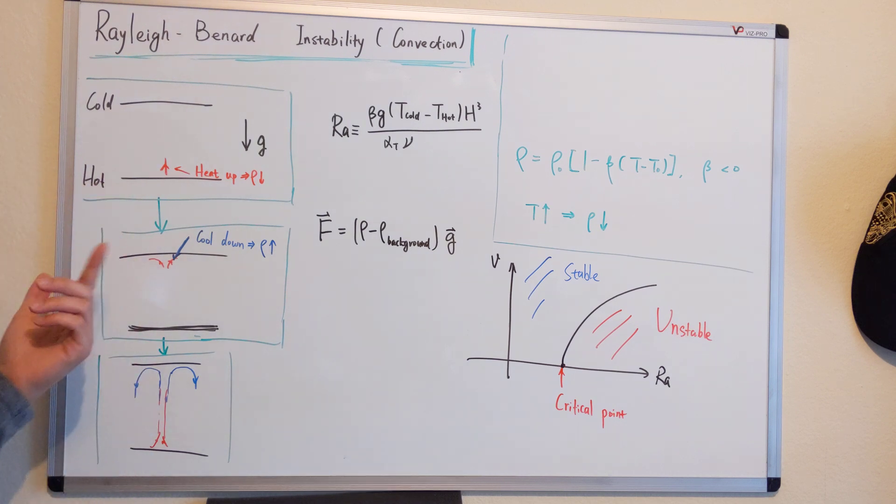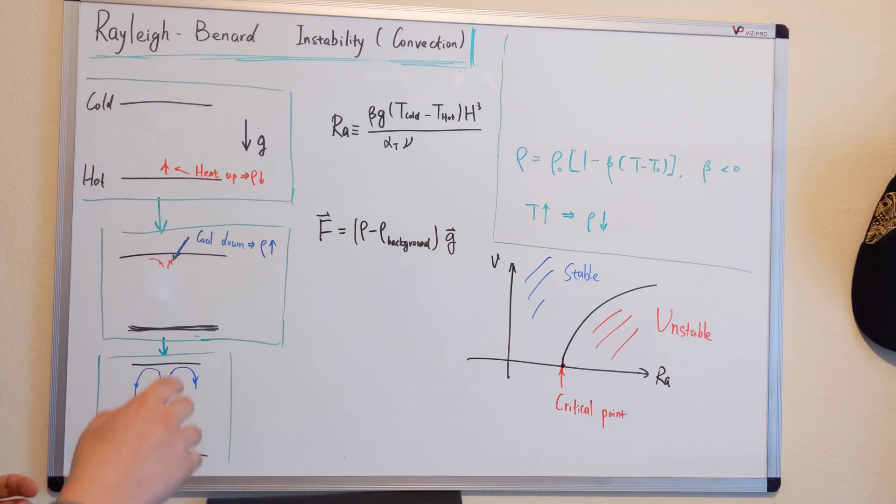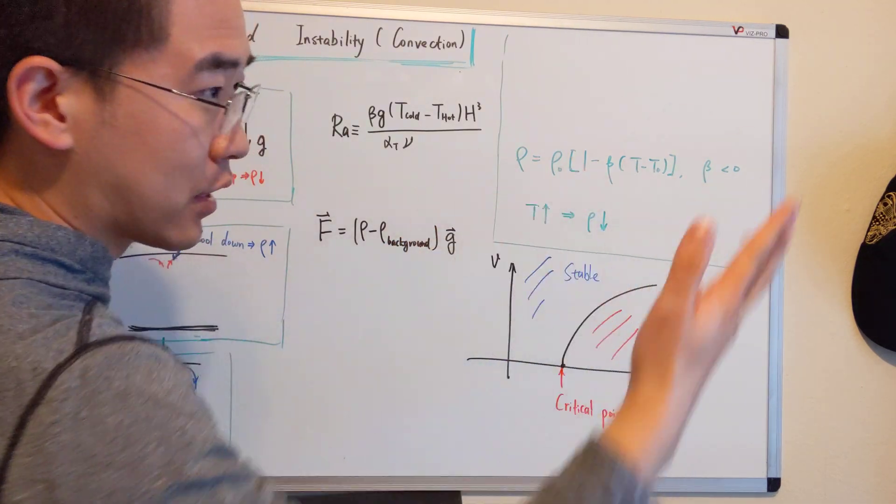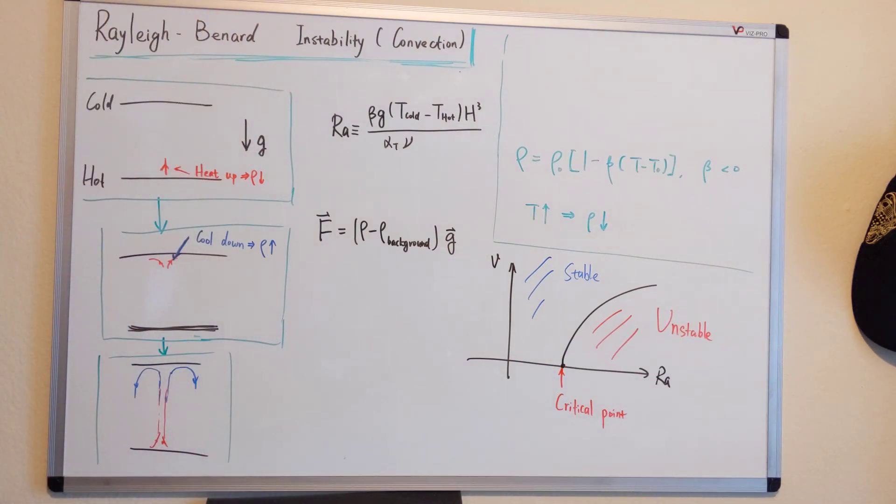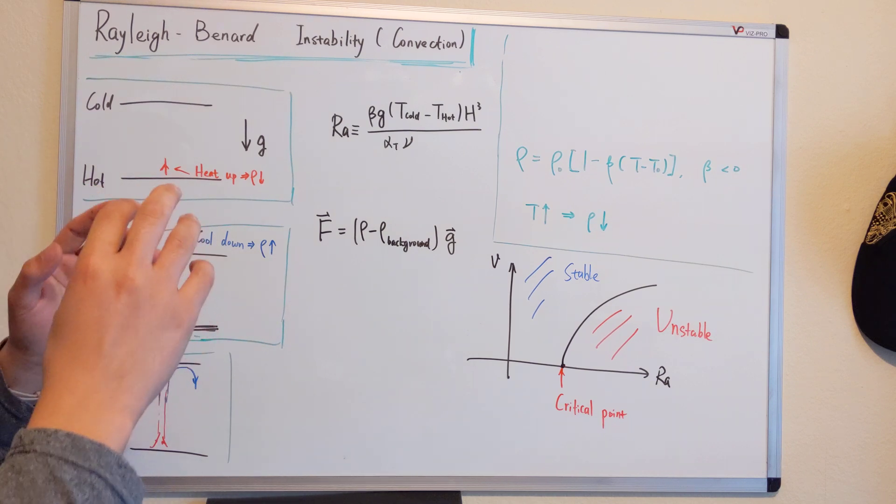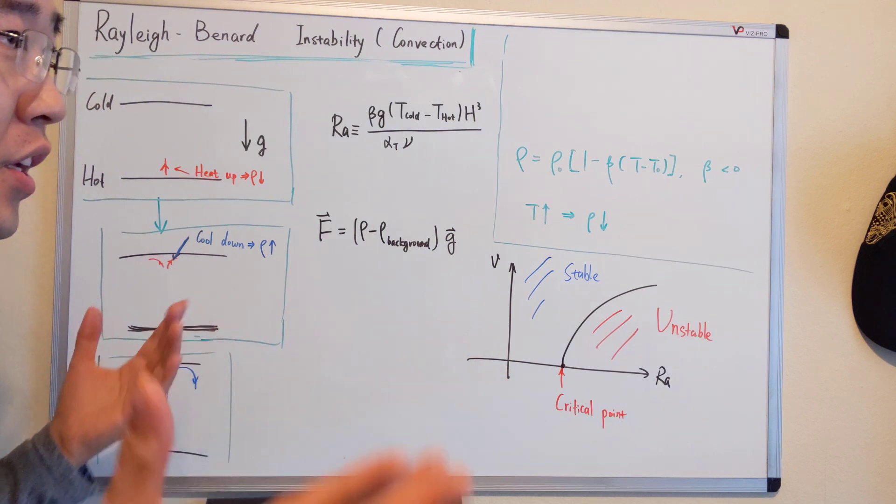So the procedure is like this: at the bottom the material is heated up. As we know from this expression, once the temperature goes up, the density goes down. So once things heat up, the density starts to drop, then it becomes light or floaty.